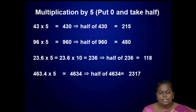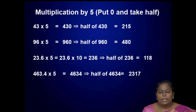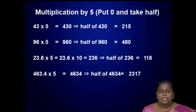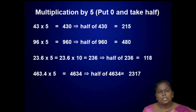For a decimal number, 23.6 into 5 is equal to 23.6 into 10, then only we get a 0, giving 236, then taking half of 236. Similarly, for 463.4 into 5, multiply by 10 to get 4634, then taking half of that number is equal to 2317.